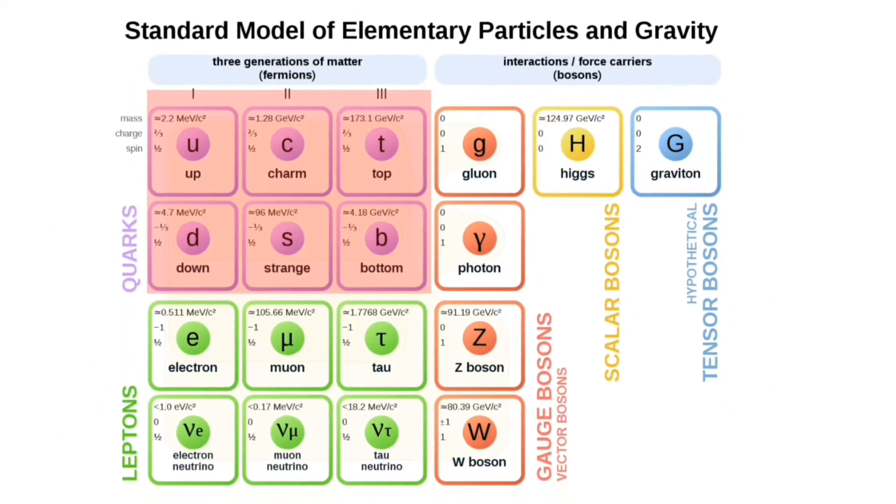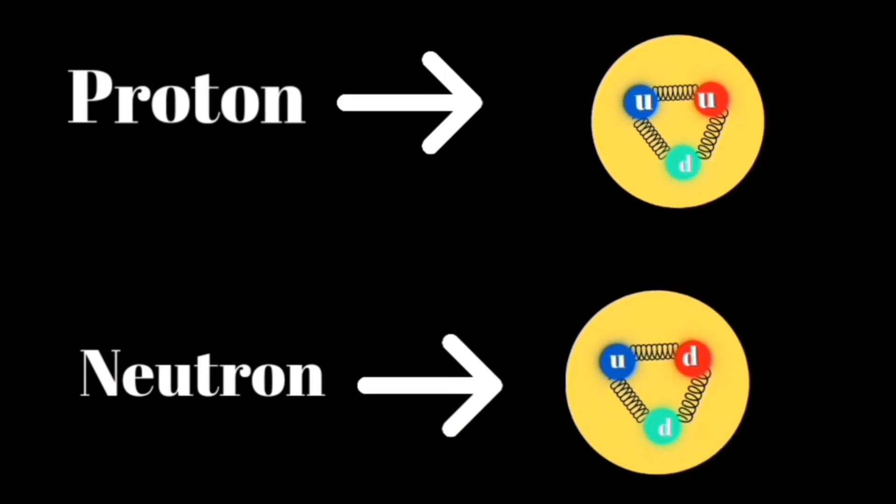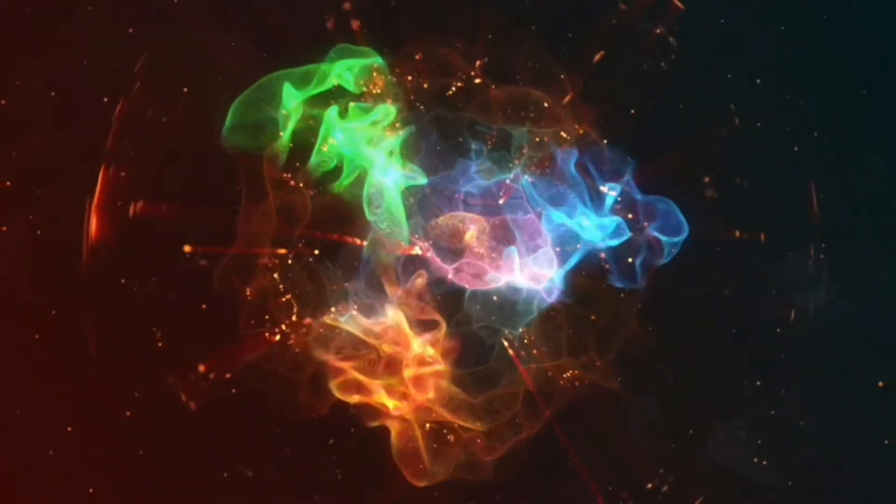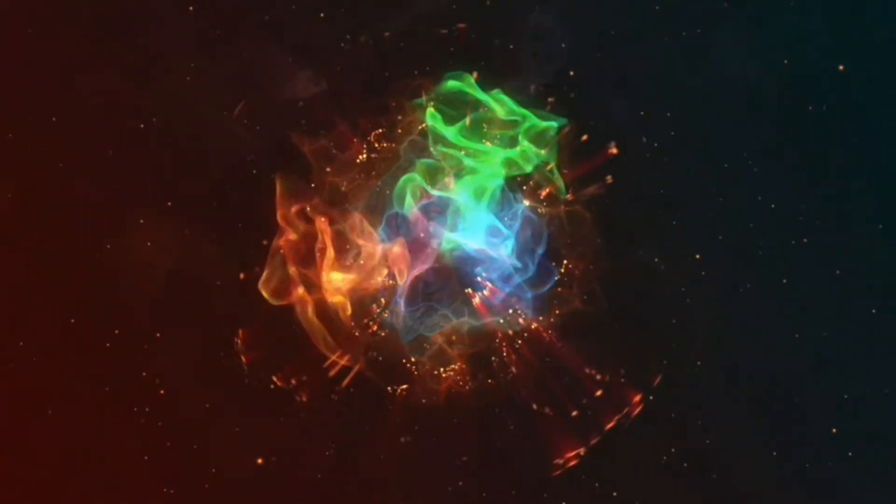Quarks are elementary particles. They combine to form particles called hadrons, the most stable of which are protons and neutrons. The atomic nuclei of all commonly observable matter is made from protons and neutrons, which are composed of up quarks and down quarks. Quarks are bound together by the strong interaction force: gluons.